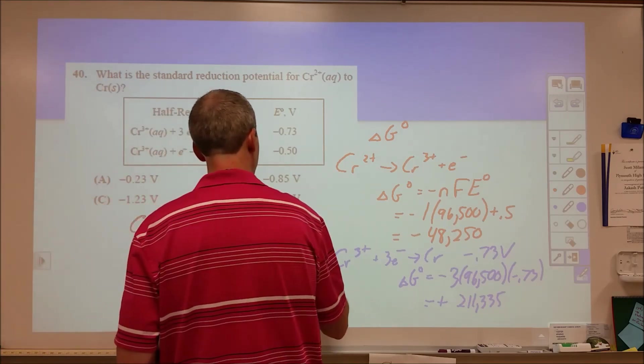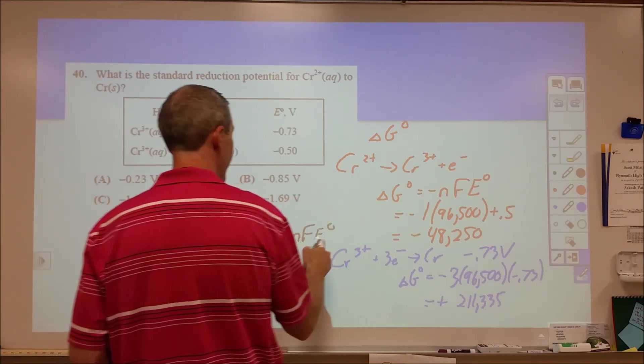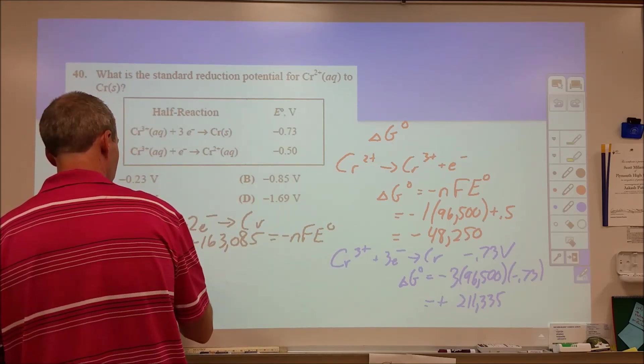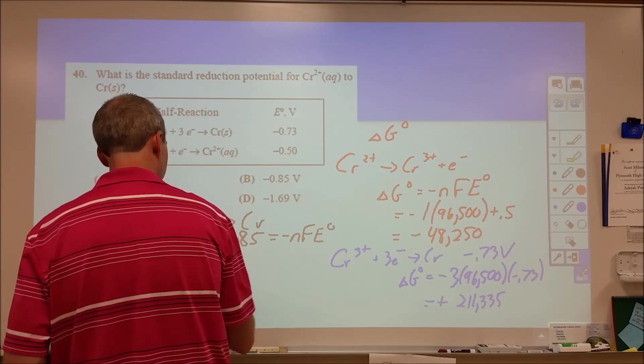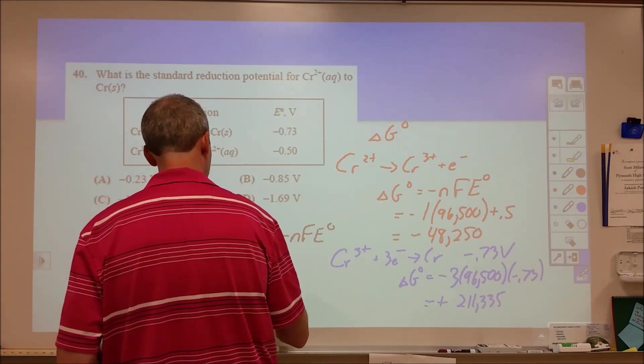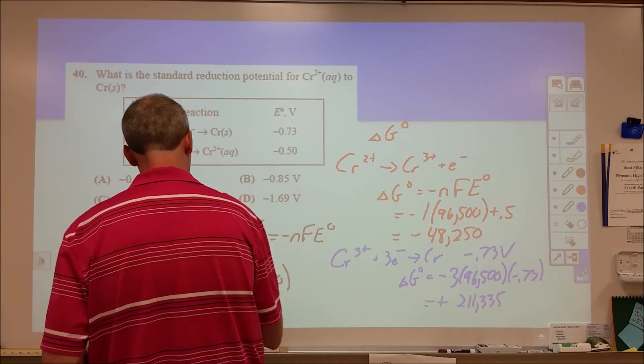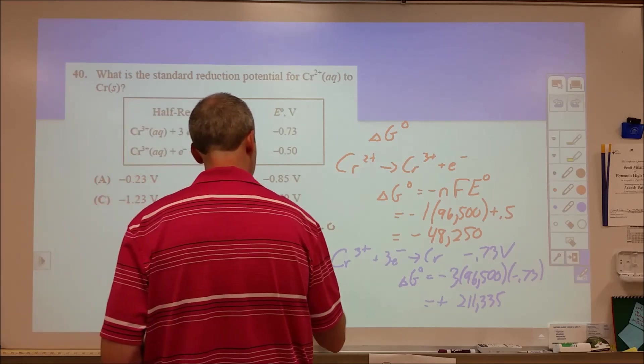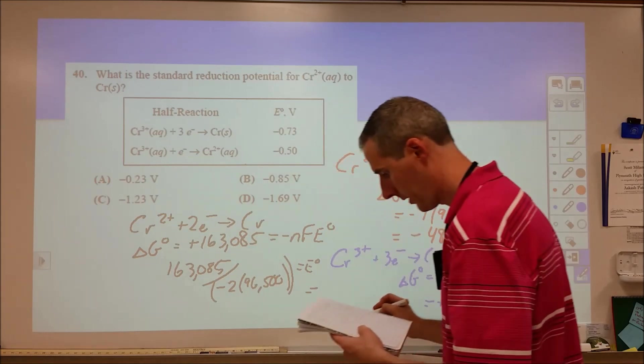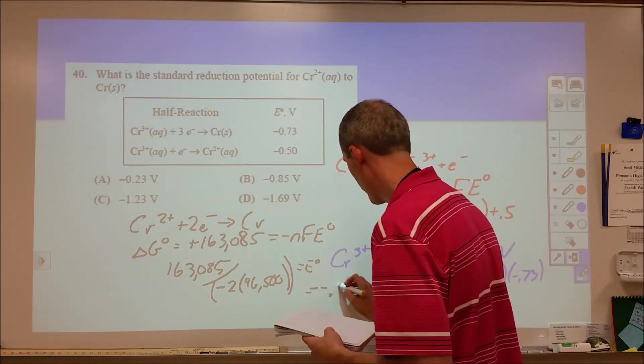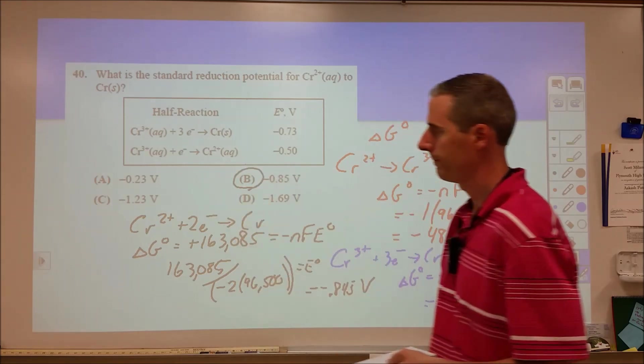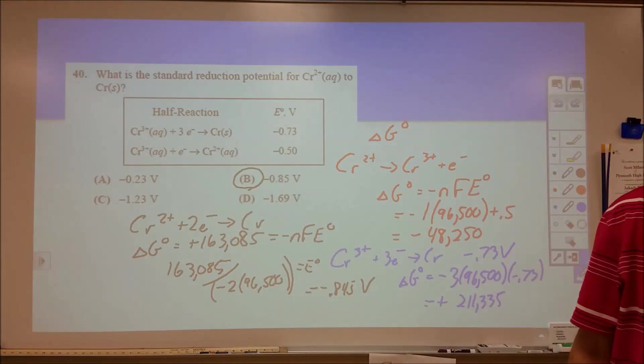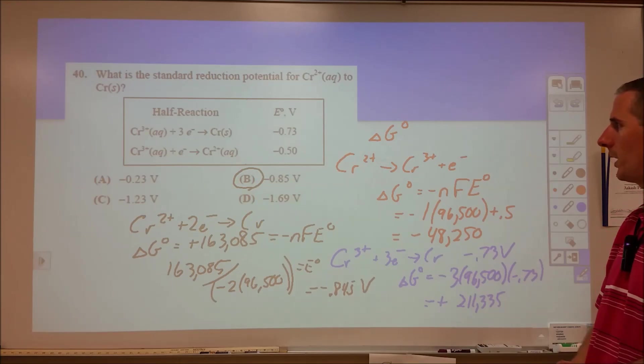And that's equal to negative NFE°. We want to know E°. So we're going to divide this by negative 2 times 96,500 equals our voltage, and that comes out to be -0.845 volts. So definitely some tricky questions in that batch of 10. Probably going to get a couple wrong in there, but that's how you do them.